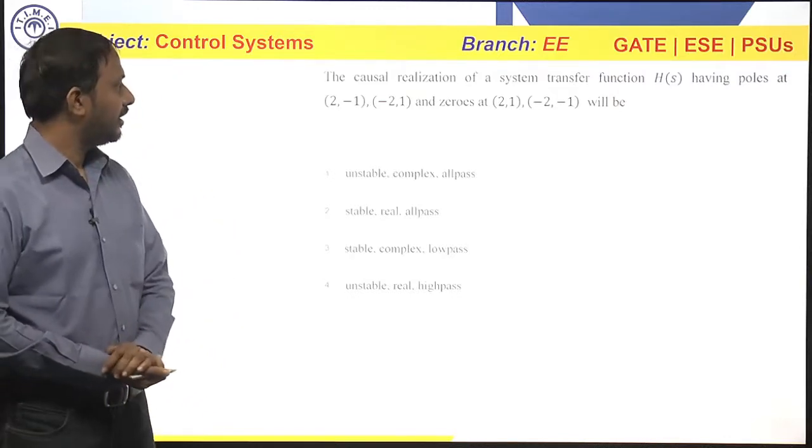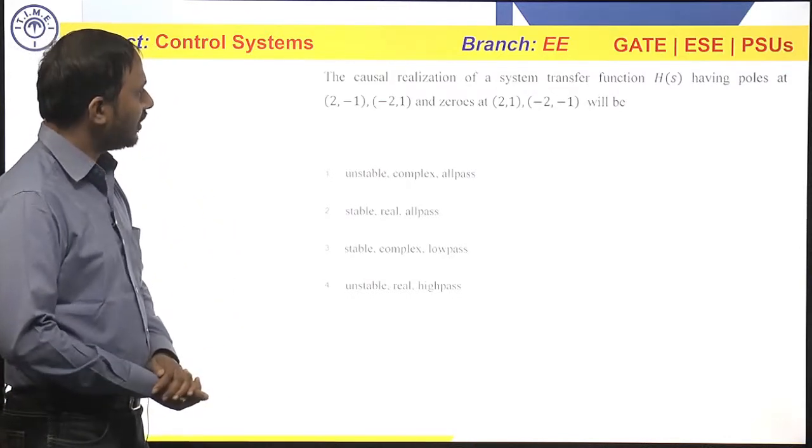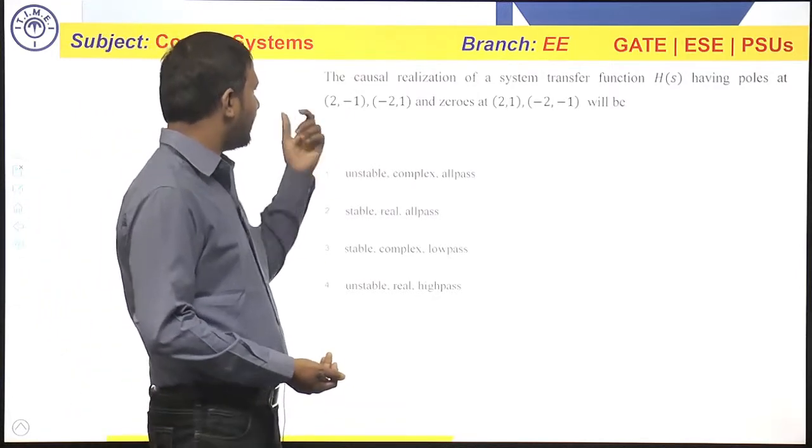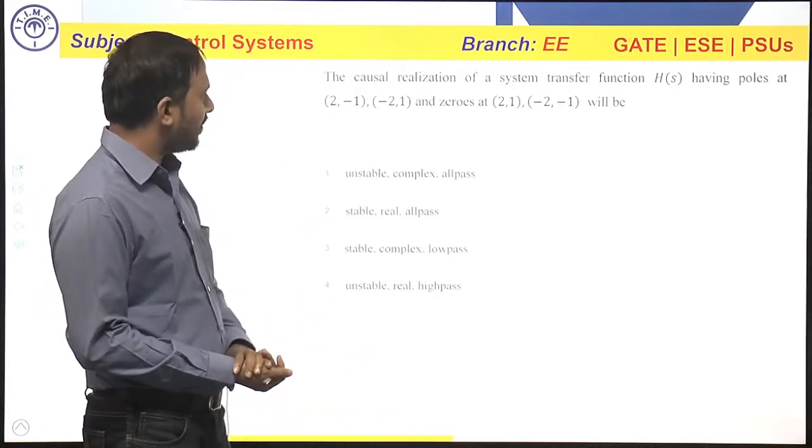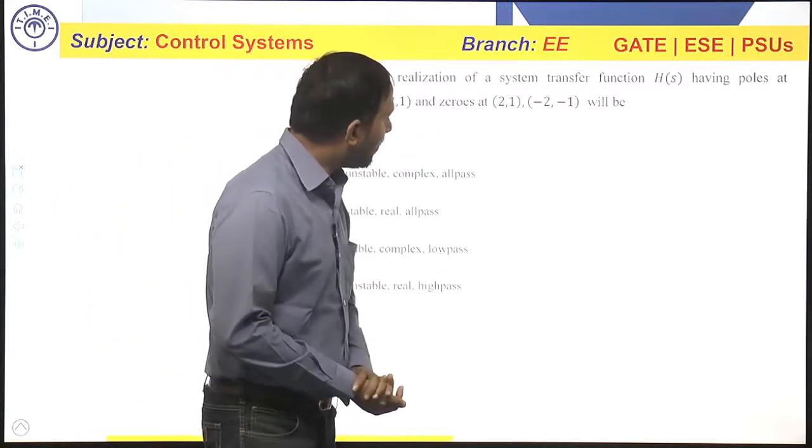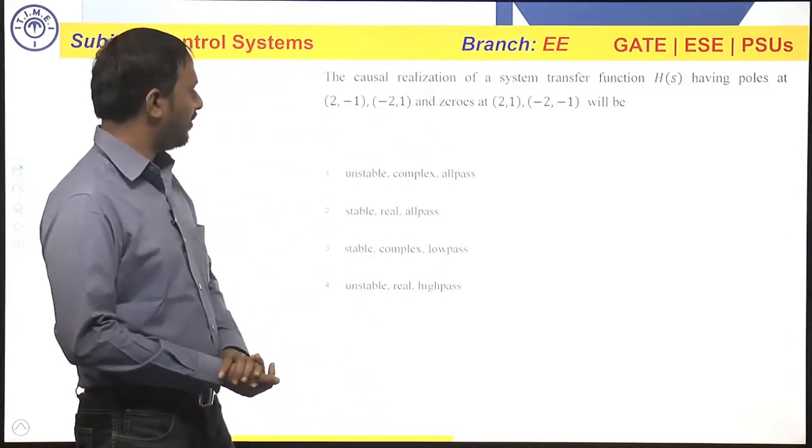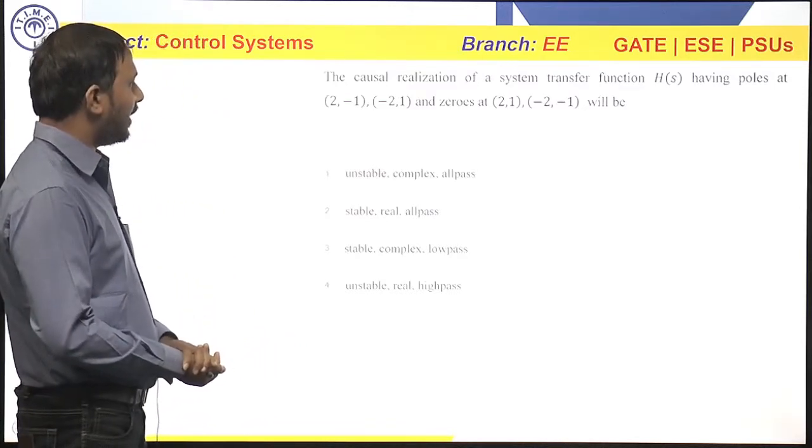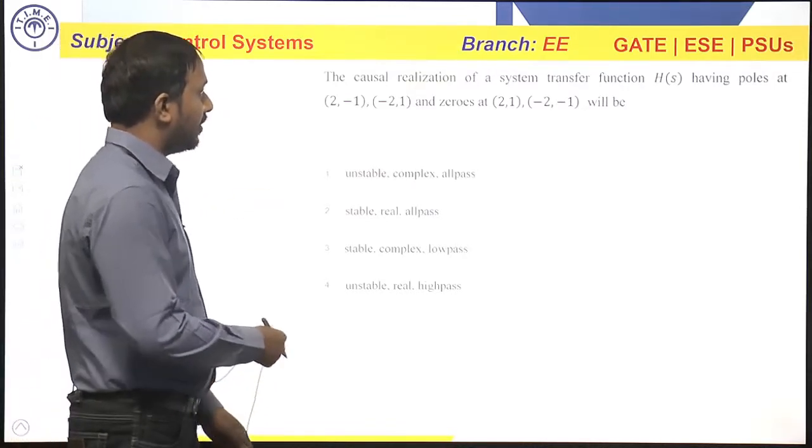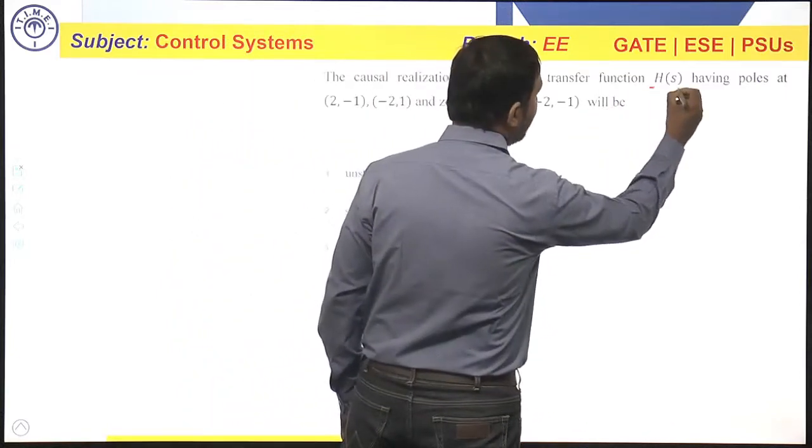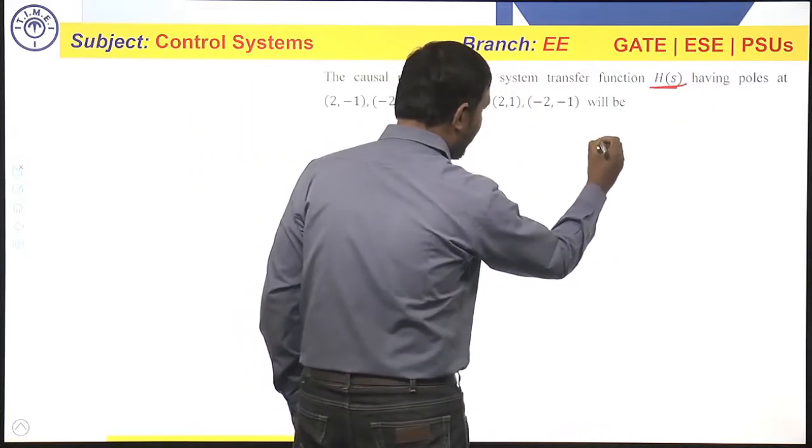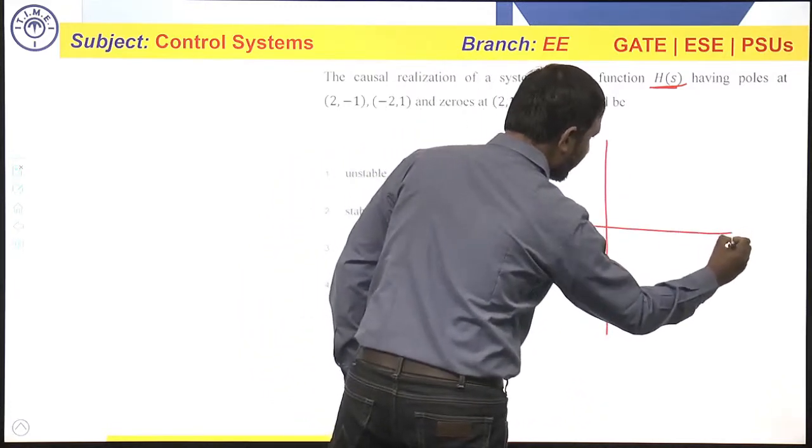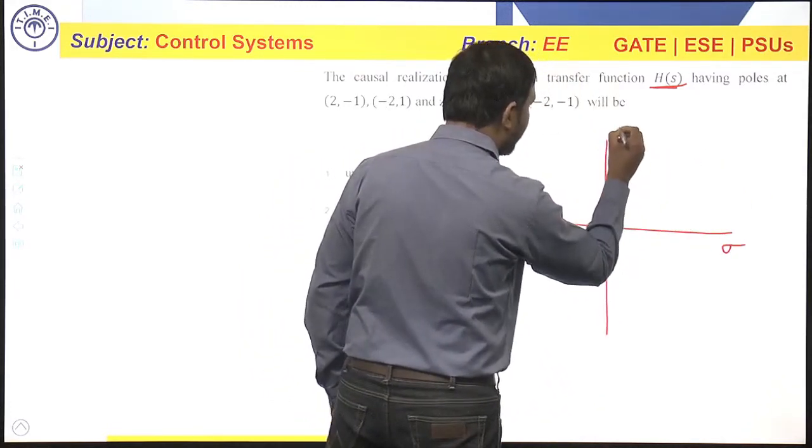Let us look at the next question. In this question he said the causal realization of a system transfer function h of s having poles at 2 minus 1, minus 2, 1 and zeros at 2, 1, minus 2, minus 1 will be and he gave four options. Now, first of all we will try to draw the pole zero plot. Now this h of s corresponds to a continuous time system. So, I am taking s plane, this is sigma, this is j omega.